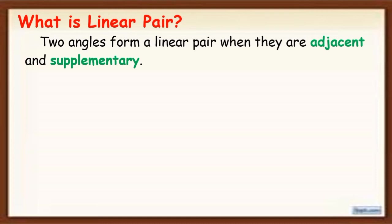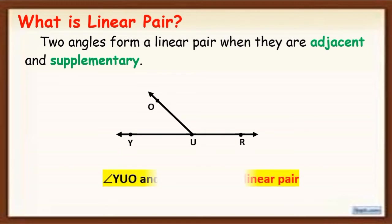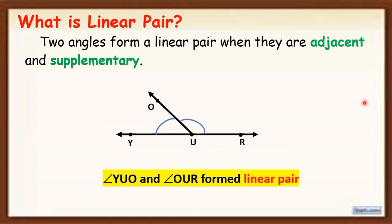So for example, we have this figure. Angle YUO and angle OUR form a linear pair, because angle YUO and angle OUR are adjacent and, as you can see, the two angles form supplementary angles.